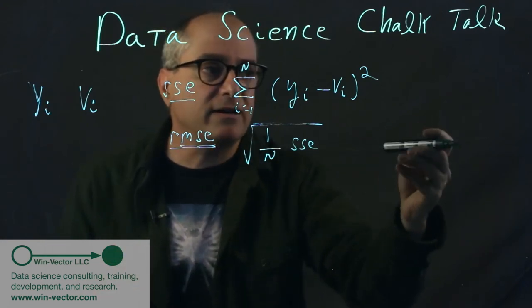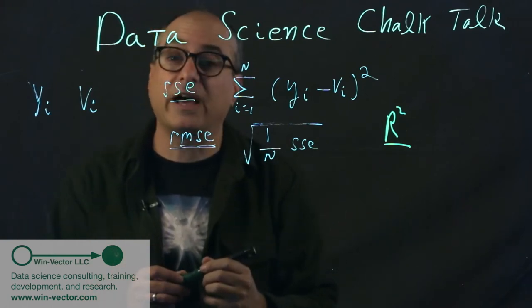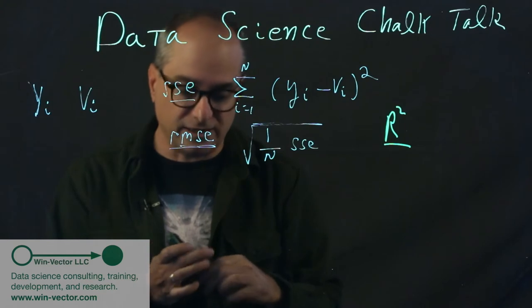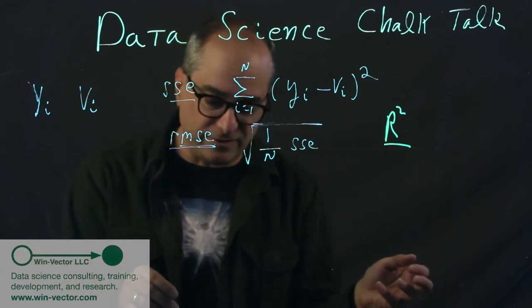Now, one metric we talked about for that was the R squared metric. And I've probably said too much on that already. But its virtue is it's a dimensionless metric. So here's another dimensionless metric that maybe makes a lot of sense to use.